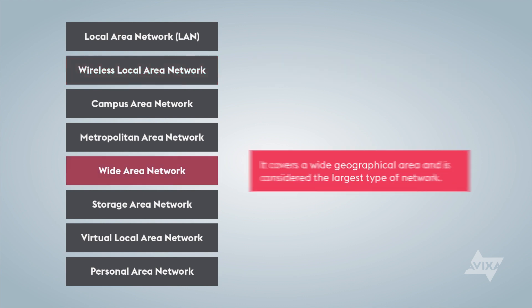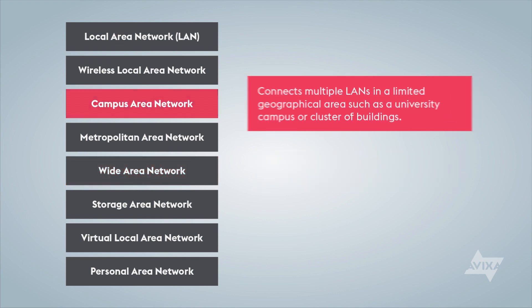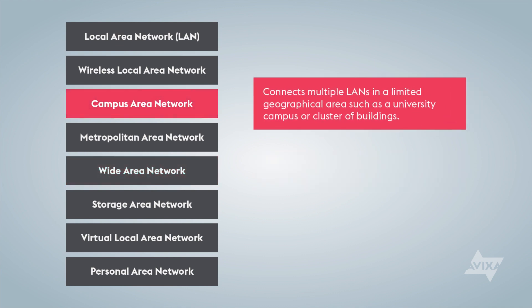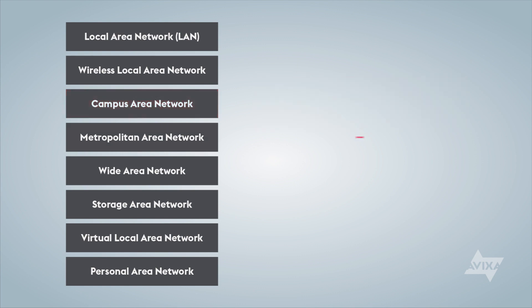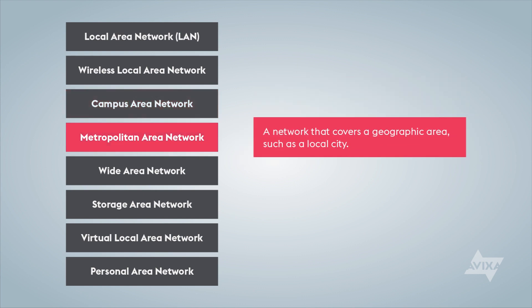A wide area network covers a wide geographical area and is considered the largest type of network. A campus area network connects multiple LANs in a limited geographical area, such as a university campus or cluster of buildings. A metropolitan area network is a network that covers a geographic area such as a local city.